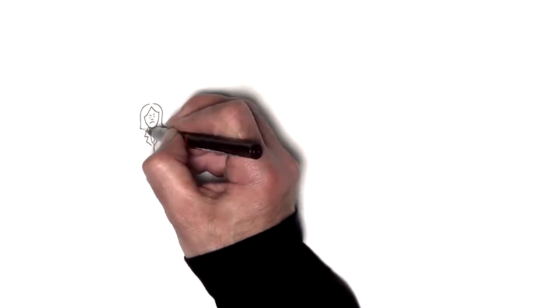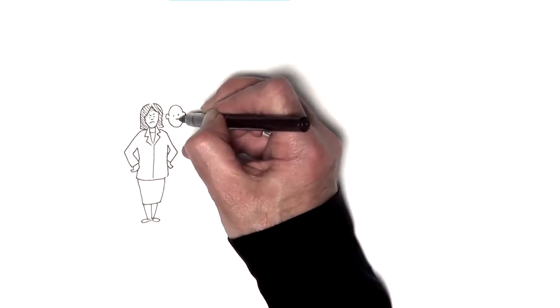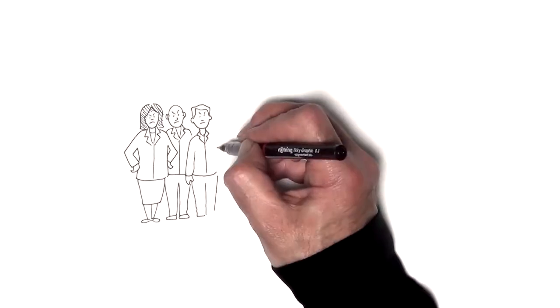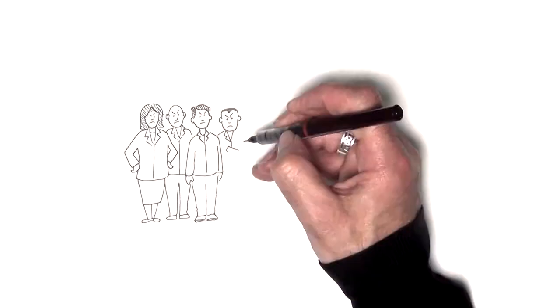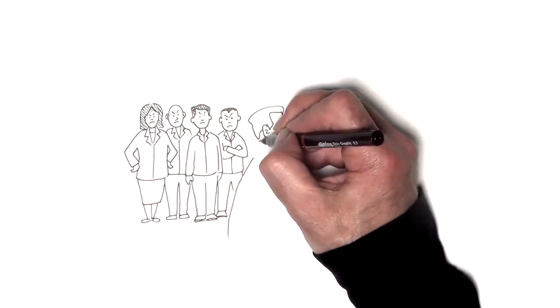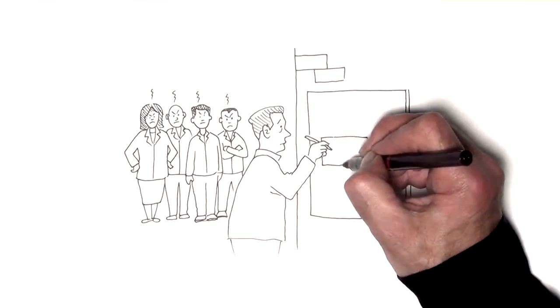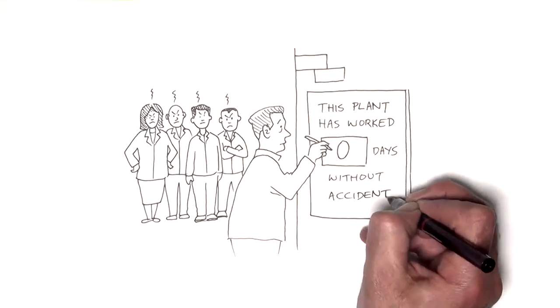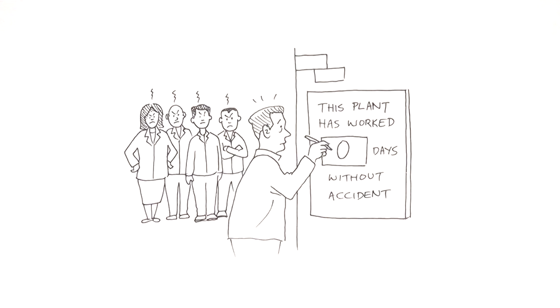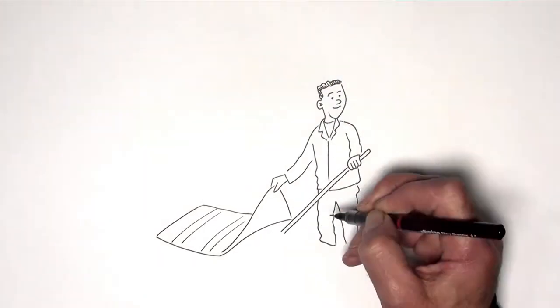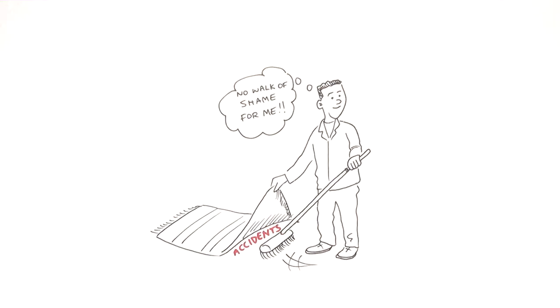If you consider how some organizations get it wrong, in one power station many years ago, we used to have a situation where you did the walk of shame. If you were the person that lost the safety record, you got to walk down the drive to the end of the site and change the so many days since we had an accident back to zero. Now, I don't know about you, but I wouldn't be reporting my accidents if that's what I had to do.